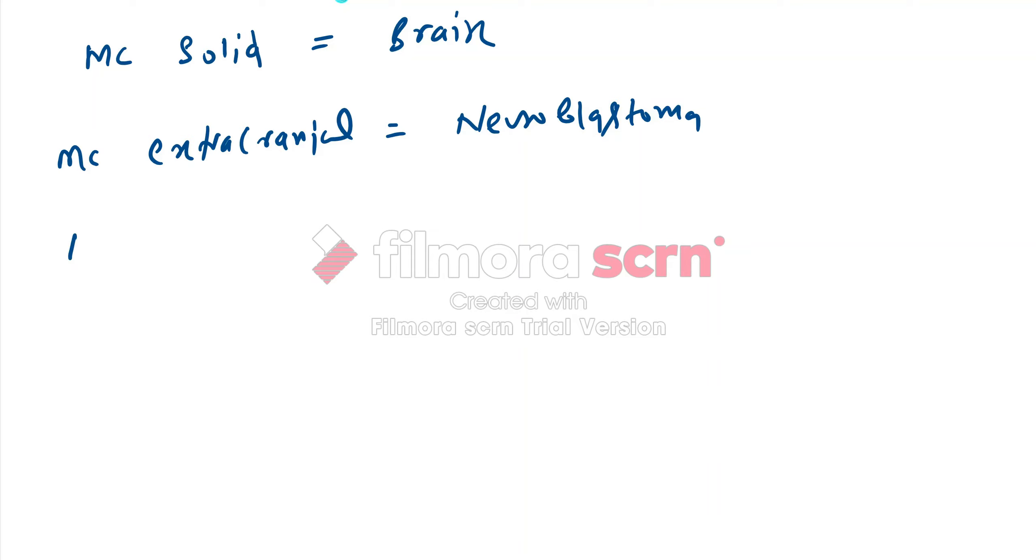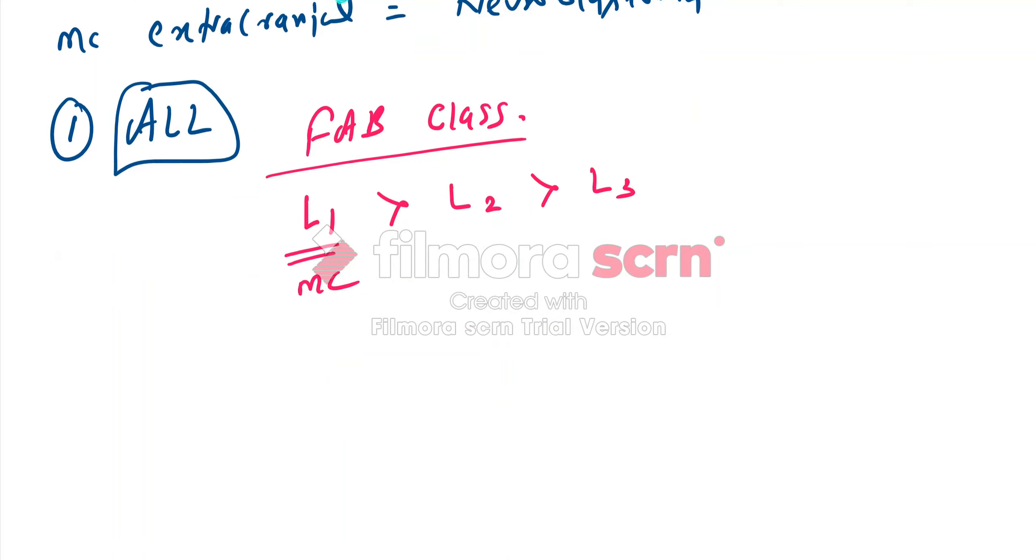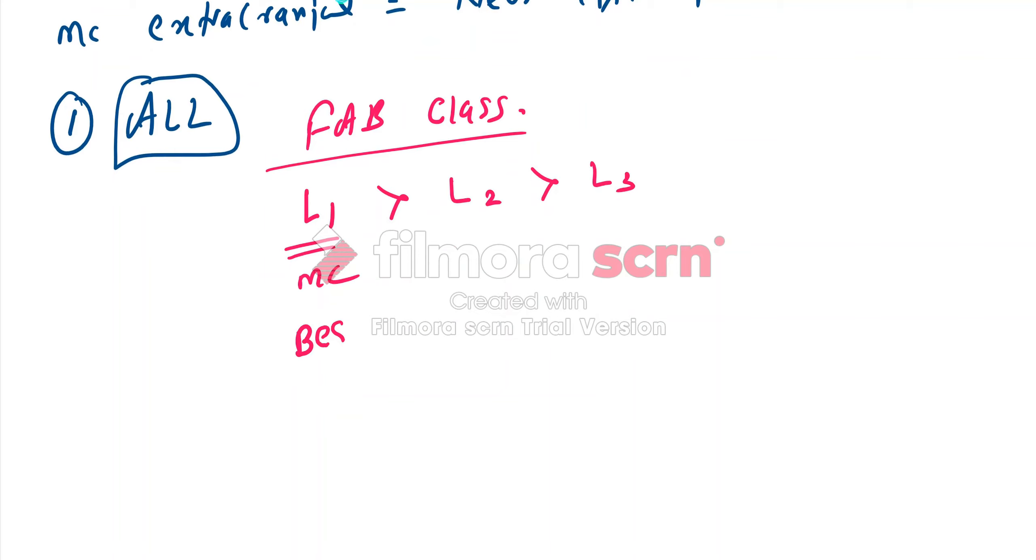Acute lymphoblastic leukemia. For ALL we have a French American British classification, the FAB classification. As per this classification, we have L1 type which is most common, then L2 and L3. The most common type is L1 type and this L1 type has the best prognosis amongst all three types.